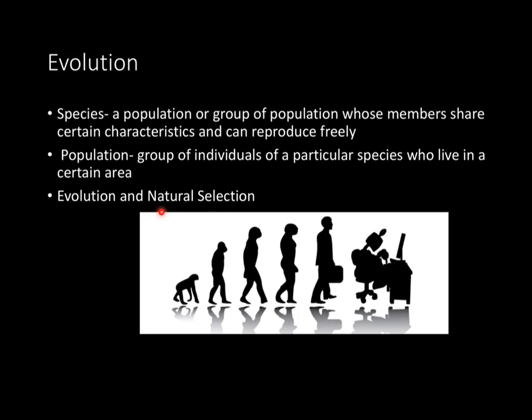Evolution is basically genetic changes over time within a certain species. Natural selection is essentially the idea of survival of the fittest, where some organisms survive and others don't based on certain characteristics.